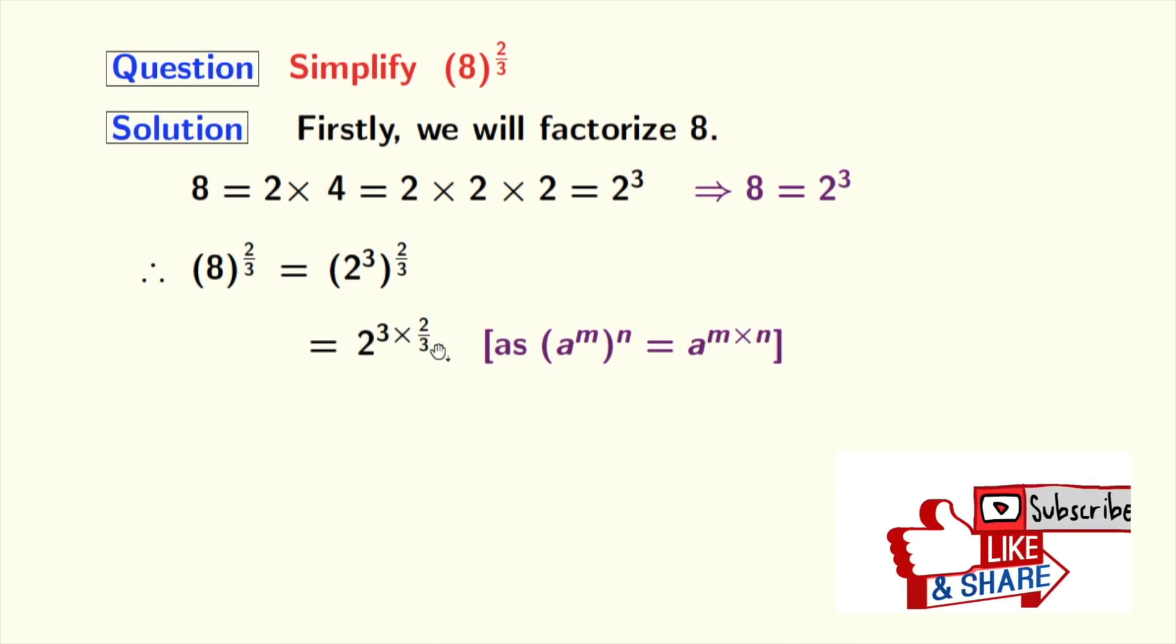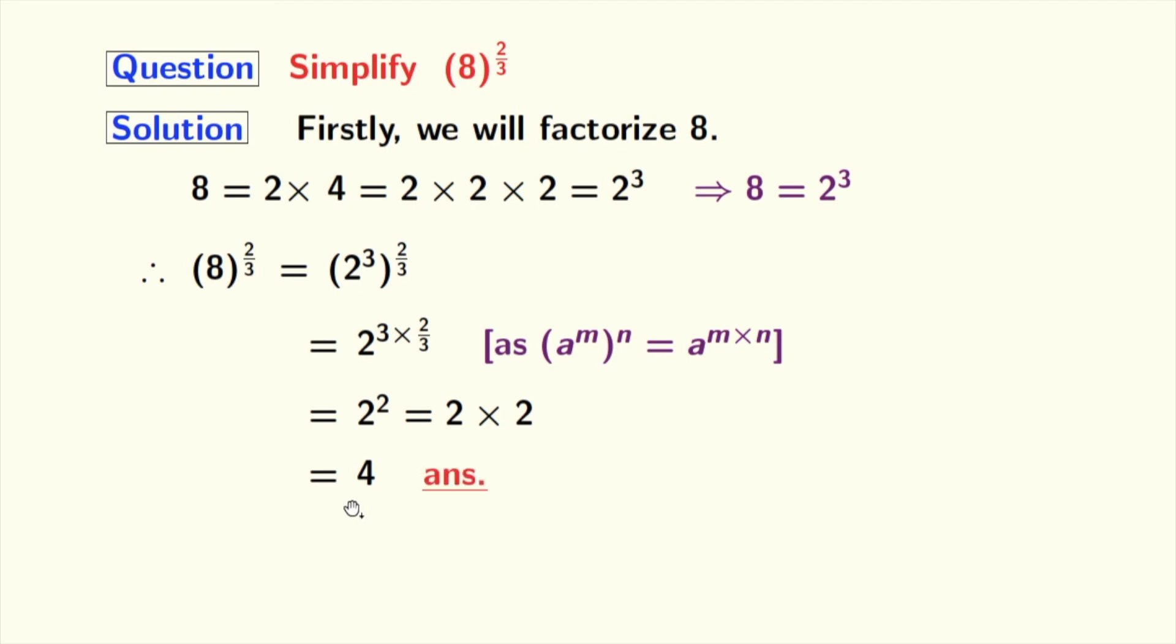Now in the power, we can see that 3 gets cancelled. So we have 2 to the power 2, that means 2 times 2, which is equal to 4. This is our final answer.